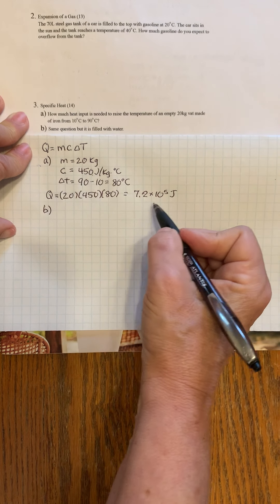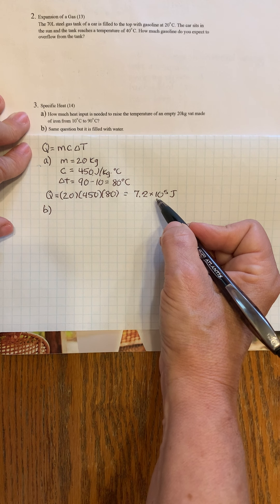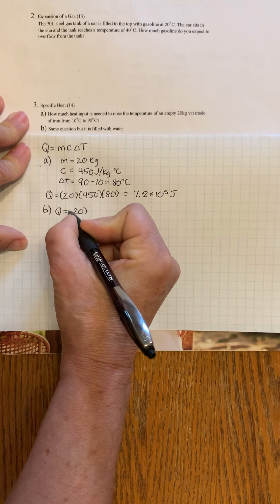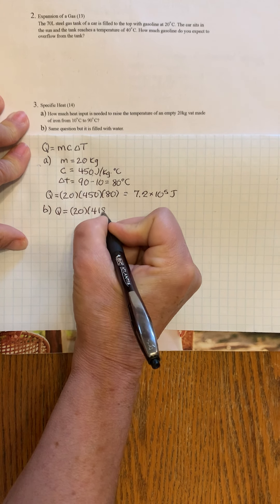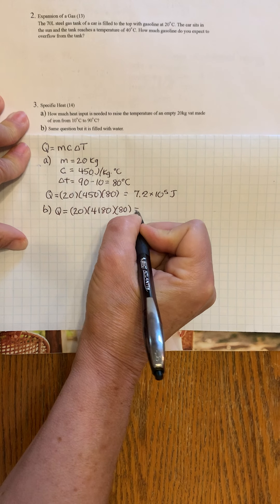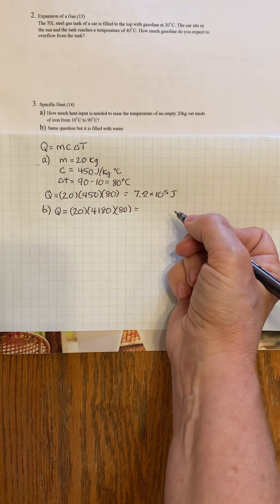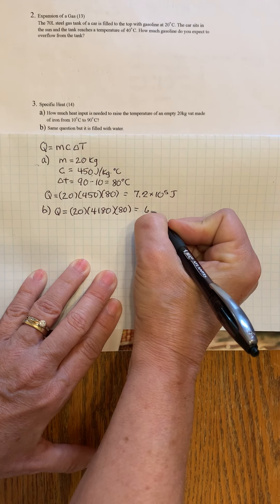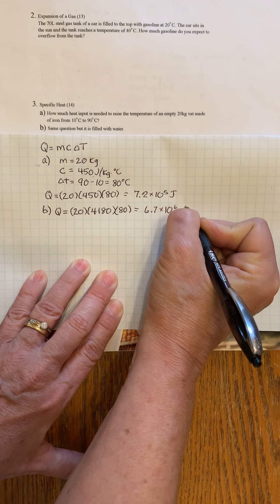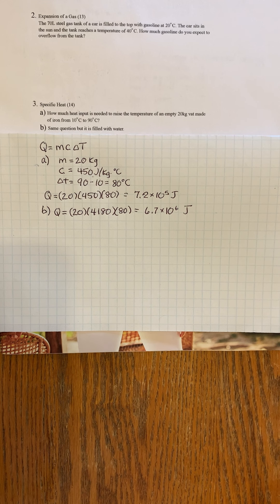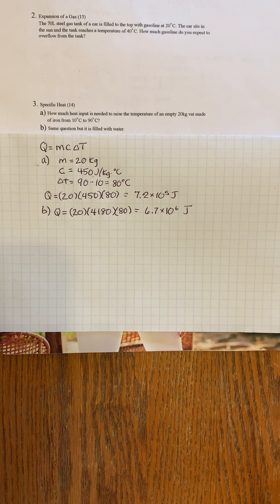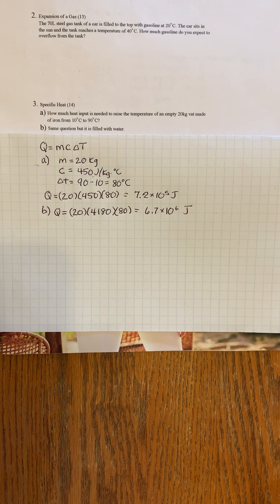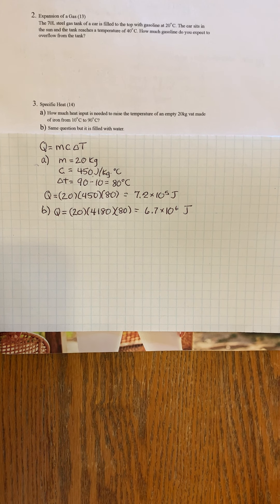Now notice that's how much it took to raise the temperature of iron. We're going to do the same thing with water now. Q equals mass, assuming the same mass, but now specific heat is 4180, and the temperature is still the same. To raise the temperature of the same amount of water from 10 degrees to 90 degrees is much more than the steel: 6.7 times 10⁶ joules, almost 10 times as much energy. You can see that water requires a lot of energy to raise the temperature whereas metals heat up much faster.